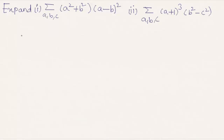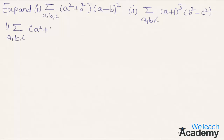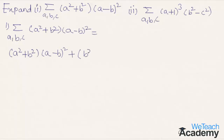Here, expand sigma(a, b, c) of (a² + b²)(a - b)². Expanding this, we get: (a² + b²)(a - b)² + (c² + a²)(c - a)² plus the remaining cyclic term. So sigma(a, b, c) of (a² + b²)(a - b)² equals (a² + b²)(a - b)² + (c² + a²)(c - a)².